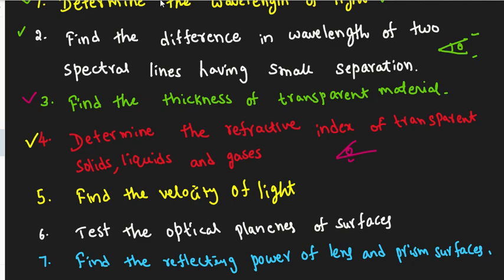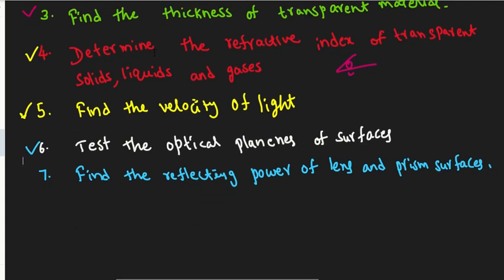Further applications include finding the velocity of light using interference experiments, testing the optical planeness of surfaces, and finding the reflecting power of lens and prism surfaces. If you have a prism or lens, you can use the interference concept to measure its reflecting power.